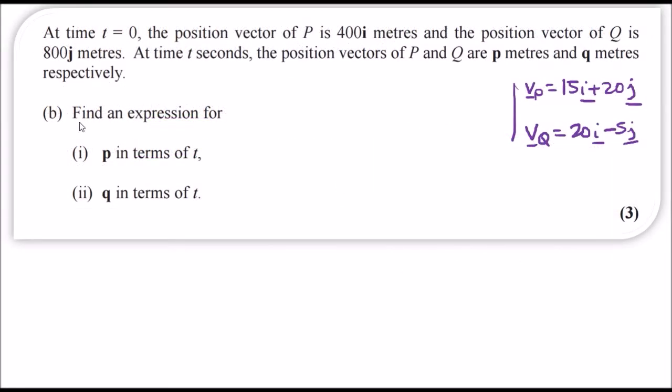Looking at part b now, at time t equals zero the position vector of P is 400i meters, so we know that r0 for P is 400i, and the position vector of Q is 800j meters, so at Q the position vector at time zero is 800j.